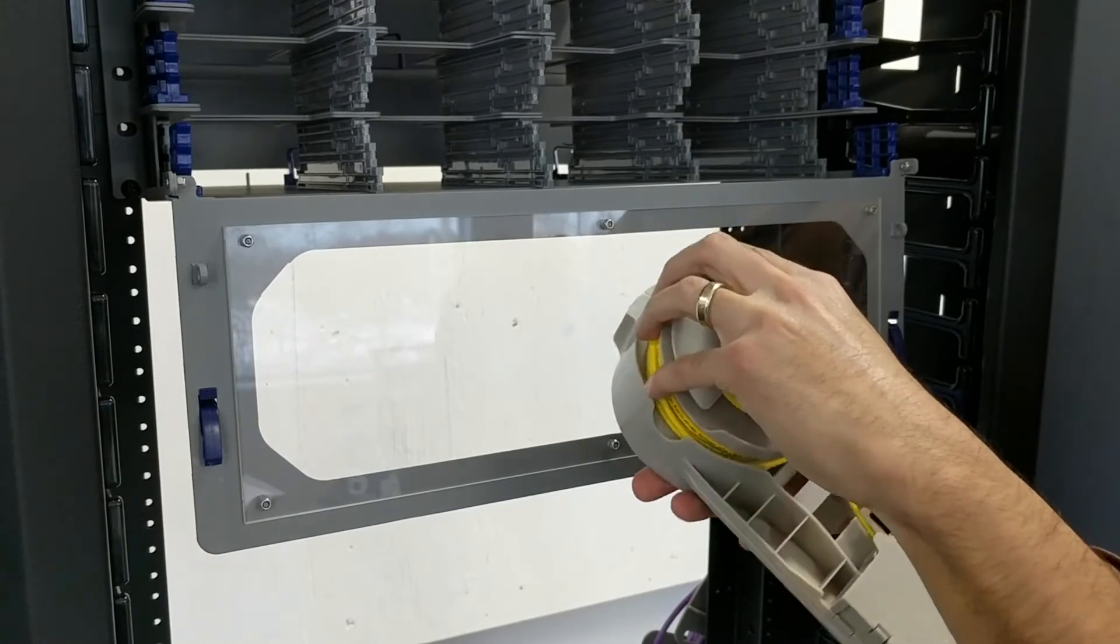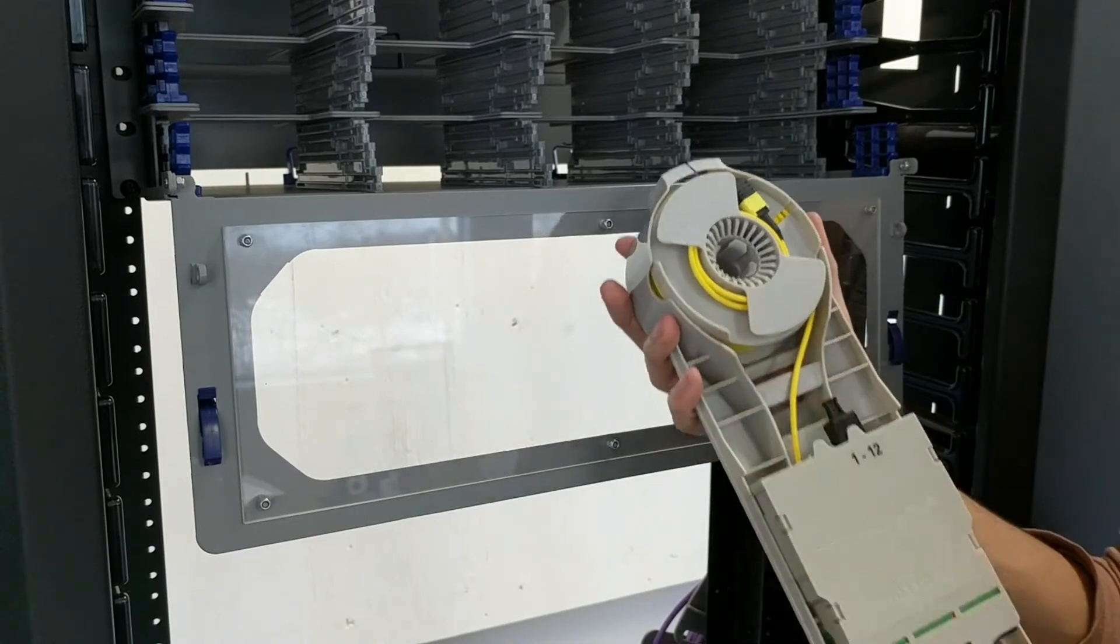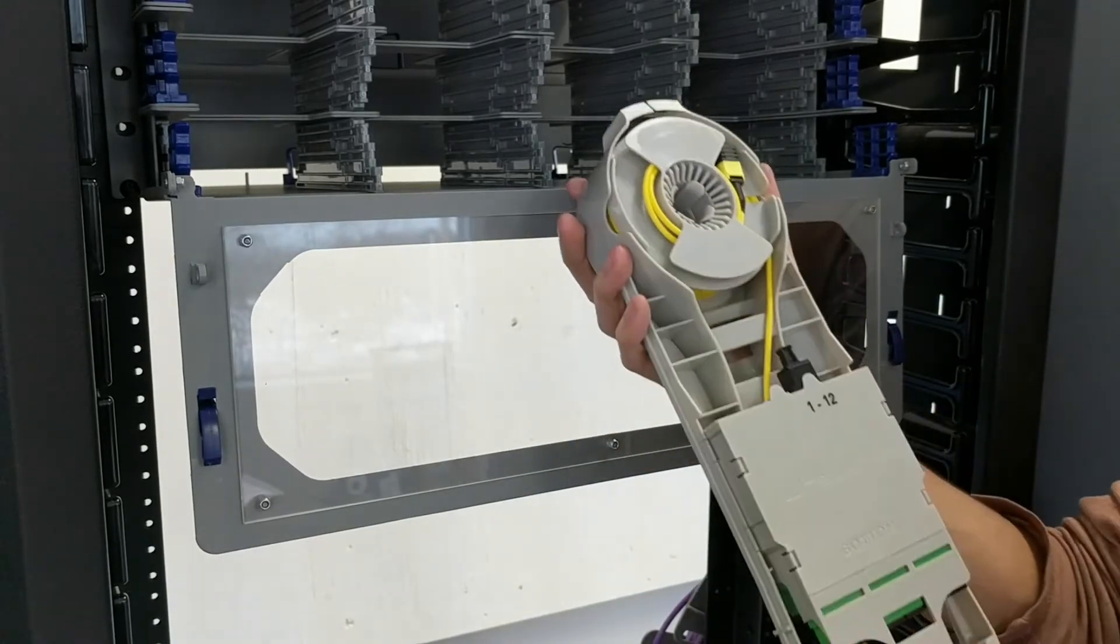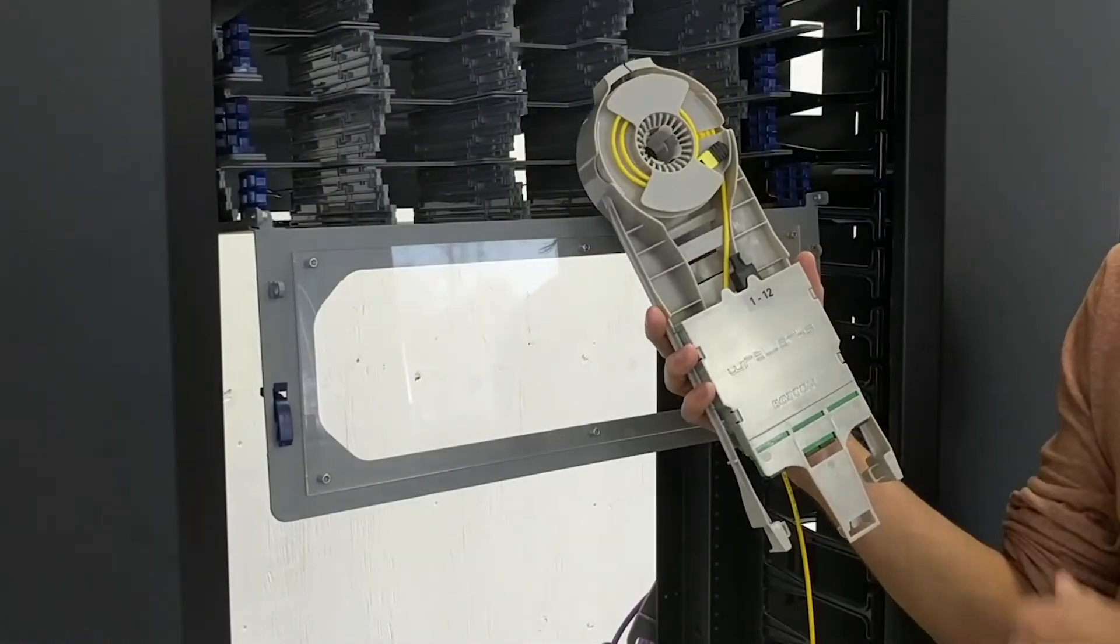Then, reinsert the flex spool again, but be careful not to kink your cables while reinserting. You will notice that when you're trying to pull your cable assembly, it will no longer move. That's because the spool is now in the lock position.